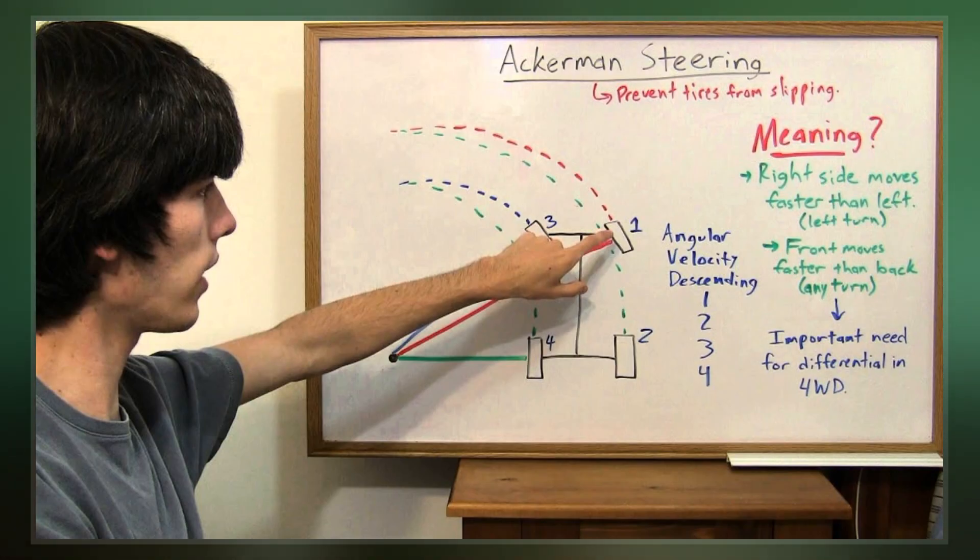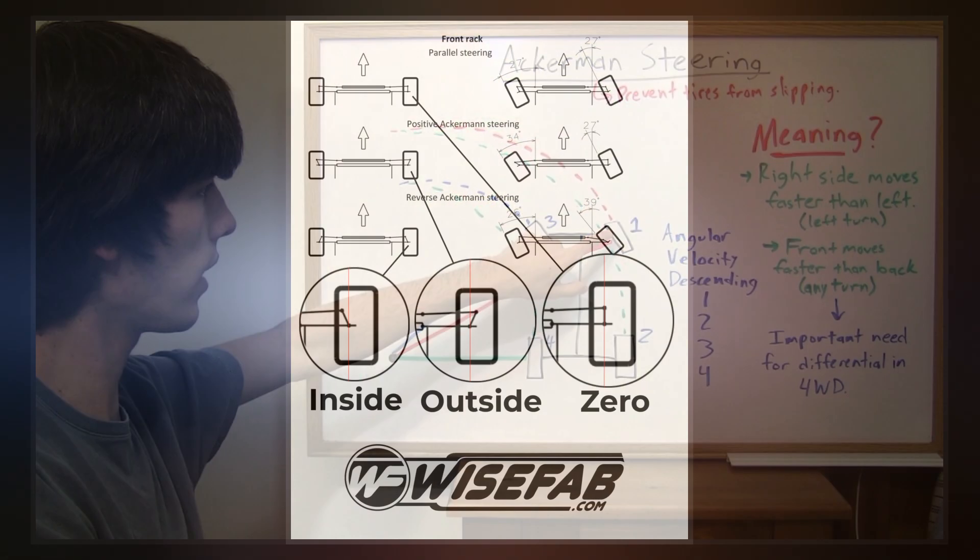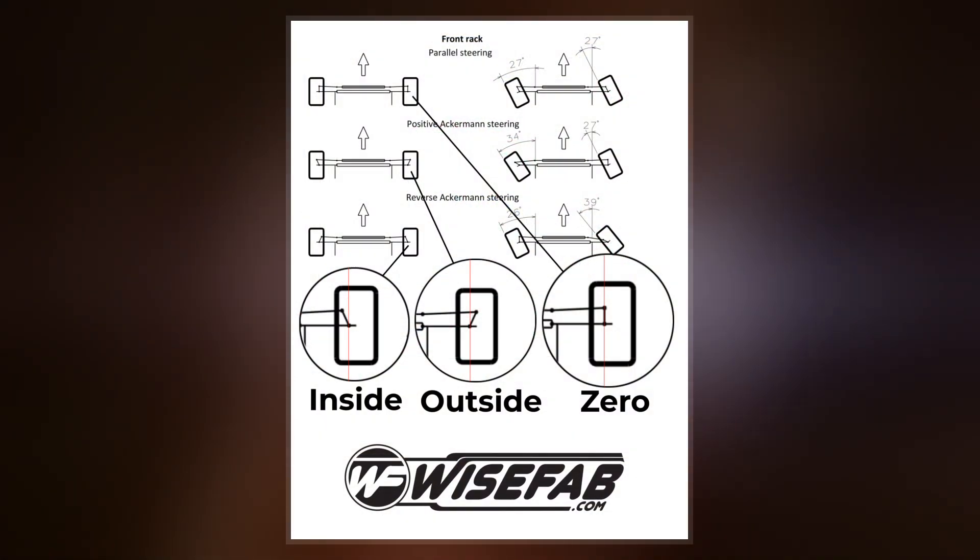Rather than the preceding turntable steering, where both front wheels turned around a common pivot, each wheel gained its own pivot, close to its own hub.